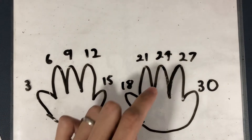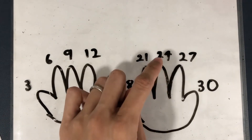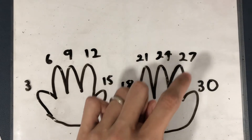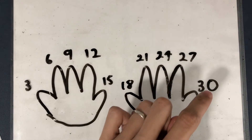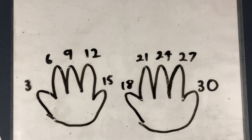6 times 3 is 18. 7 times 3 is 21. 8 times 3 is 24. 9 times 3 is 27. 10 times 3 is 30. Now let's try that together one time, using your fingers to the screen. Ready, go.